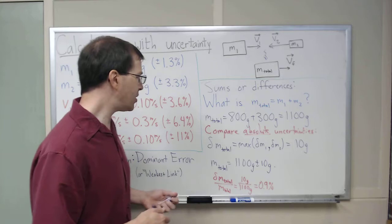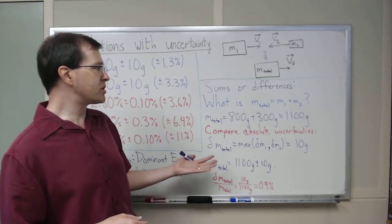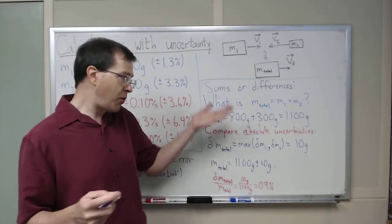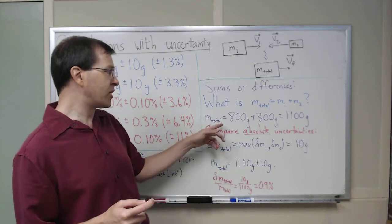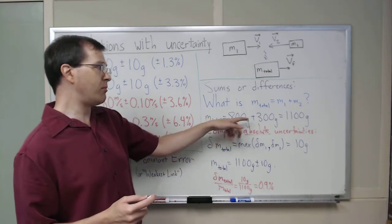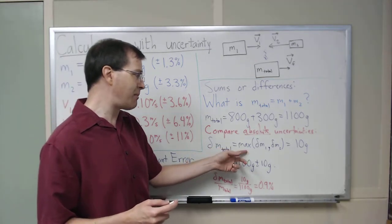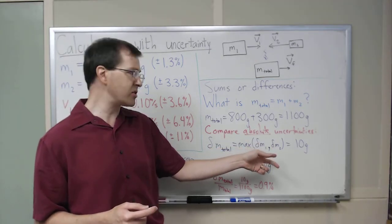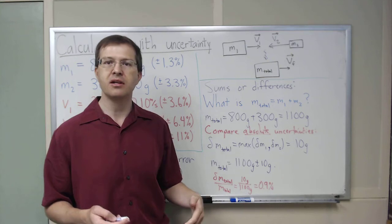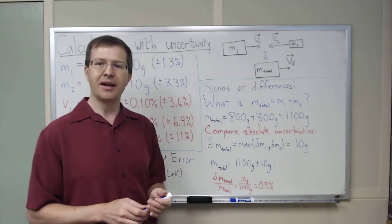So that is how you do sums and differences. I should say the process is exactly the same if I were looking for the difference in mass. 800 minus 300 would be 500 grams, and the uncertainty there, you still just take the maximum of the two absolute uncertainties. It would still be 10 grams. So that's our story and I hope it's useful.